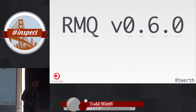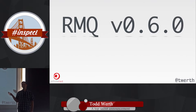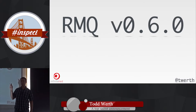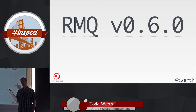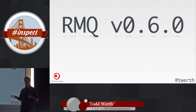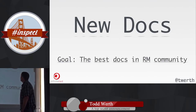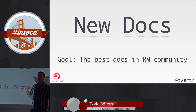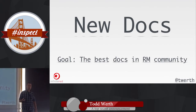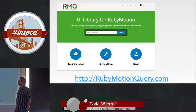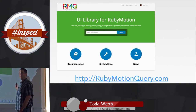RMQ version 0.6 — a note on the version number: I believe version 1.0 is a big deal, so 0.6 is actually like the fourth major upgrade, almost like version 4.0, but I'm of the school of thought that getting to 1.0 is a big deal. So, what's new in version 0.6: new docs. Gant and Steve Ross are helping me work on docs starting now, and our goal is to make the best docs in the RubyMotion community.